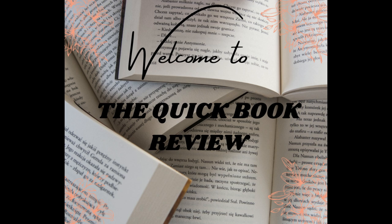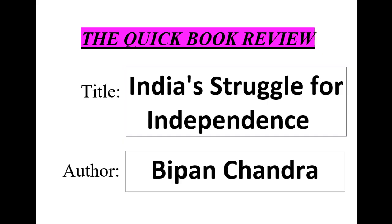Hey folks, welcome to the Quick Book Review, your one-stop shop for book summaries. In this video we summarize the book India's Struggle for Independence — a comprehensive and detailed account of India's independence movement against British colonial rule, written by the late historian Bipan Chandra. The book covers the period from 1857 to 1947, tracing the evolution of the national movement and the various events and individuals that contributed to India's eventual independence.